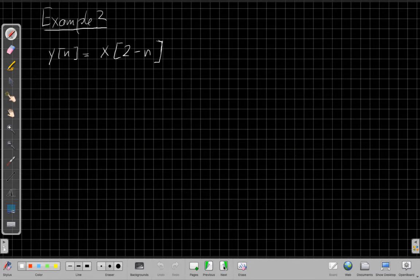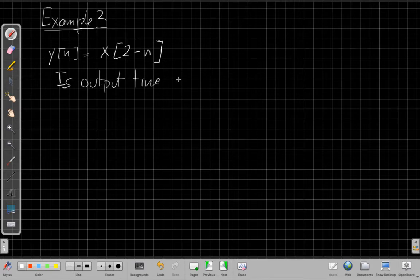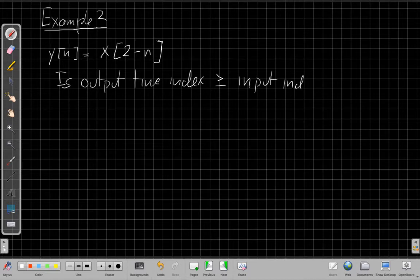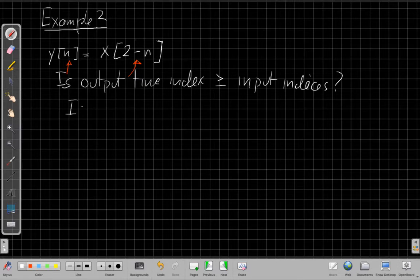Going to another example, what about y of n is equal to x of 2 minus n? The key question is, is the output time index greater than or equal to the input time indices? Because if that's true, that means the output now only depends on current and earlier versions of the input. I can say, the output is n. The input time index is 2 minus n. Causality is equivalent to saying, is n greater than or equal to 2 minus n? So if I solve this equation, I'll add n to both sides, I'll get 2n greater than 2.